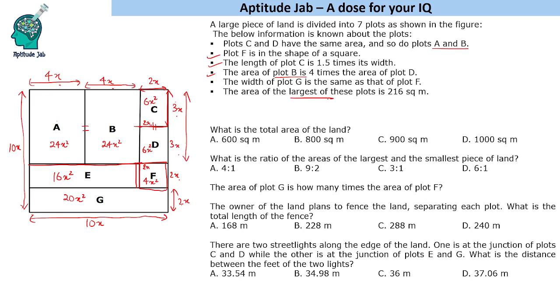It is given that the area of the largest of these plots is 216. So, these 2 are the largest plots. So, 24x square is 216. So, this gives us x square as 9 or x as 3. Let us put the value of x as 3 and then answer the subsequent questions.